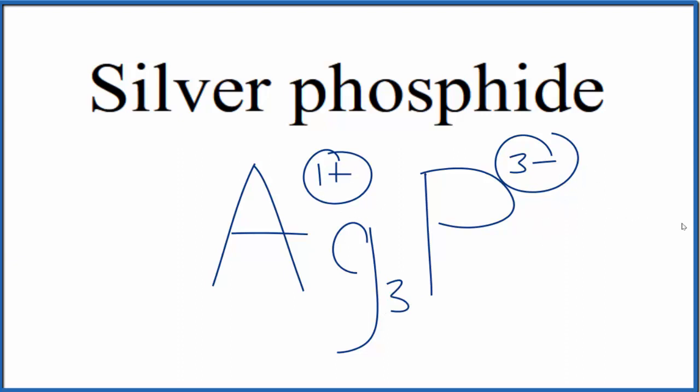So this is the formula for silver phosphide: Ag3P.